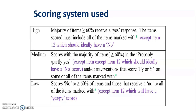Our scoring system categorised interventions as either high, medium, or low quality. To attain a high score, the majority of items — 60% or more — had to receive a yes response, and all items marked with an asterisk had to be included, except item 12, which was reverse scored and therefore had to have a score of no. To attain a medium score, 60% or more of the items had to receive at least a probable or partly yes score, and/or have a probably, partly, or yes score on some or all asterisk items. Low scores were given to interventions that scored no to 60% or more of items, or no to all asterisk items, except item 12, which would obtain a score of yes or partly yes for low score marking.